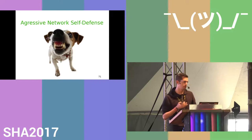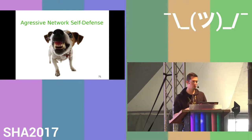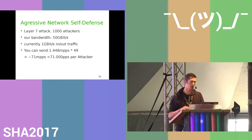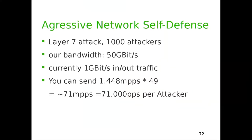Now for the fun part — aggressive network self-defense. Don't do this at home, don't do this at work, it's probably illegal — this is just theory. Say we're getting a layer 7 attack from a thousand people running Web-LOIC. We have 50 gigabits per second bandwidth and normal traffic is 1 Gbps in / 1 Gbps out. With 49 spare gigabits, at one gigabit you can send 1.448 million packets per second — that's 71,000 packets per second to every attacker. That may be enough to disable cheap home routers and shut down the attack.